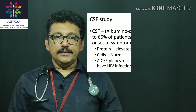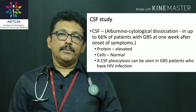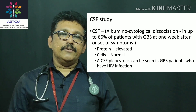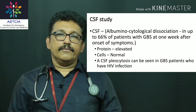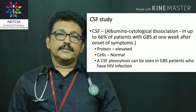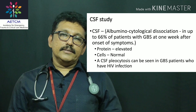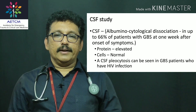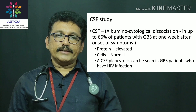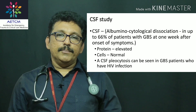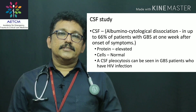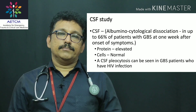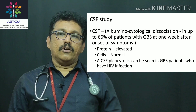CSF in GBS typically shows albuminocytological dissociation — any inflammation increases albumin in the CSF. In meningitis, cells are increased along with albumin; but in GBS, there is no actual infection in the brain, so cells are normal while albumin is elevated. This is called albuminocytological dissociation, seen in up to 66% of GBS patients one week after the onset of symptoms.